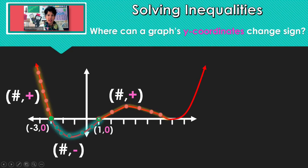So here at that x-intercept, the y was zero, but before it was negative and after the y part was positive. So we changed sign at an x-intercept again.